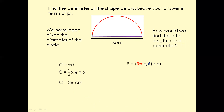So 3 pi plus 6. Now if you go back and read the question again, it says leave your answer in terms of pi. That means we don't need to simplify further. So that is going to be your final answer.